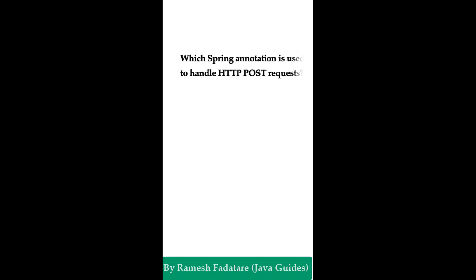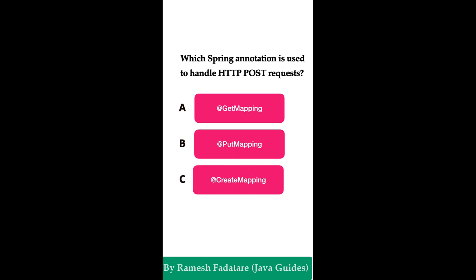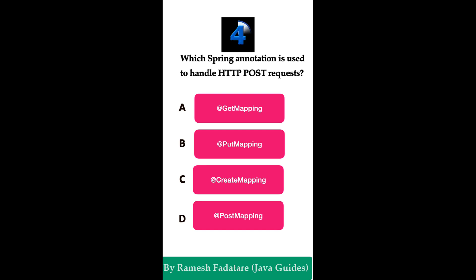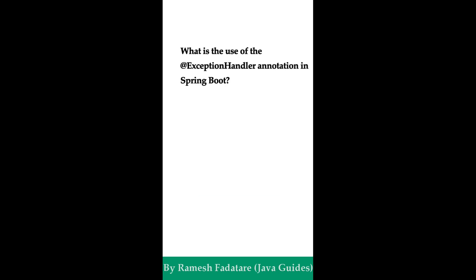Which Spring annotation is used to handle HTTP POST requests? Option A: @GetMapping. Option B: @PutMapping. Option C: @CreateMapping. Option D: @PostMapping. The correct answer is option D, @PostMapping. The @PostMapping annotation in Spring Boot is used to map HTTP POST requests to a specific handler method in the controller. We typically use it to create resources on the server side, and it is a shortcut annotation for @RequestMapping combined with the HTTP POST method.